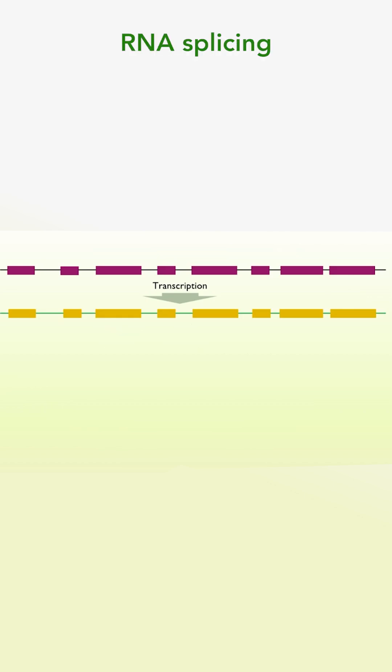A process called RNA splicing then removes the introns, joining the exons into a contiguous sequence.